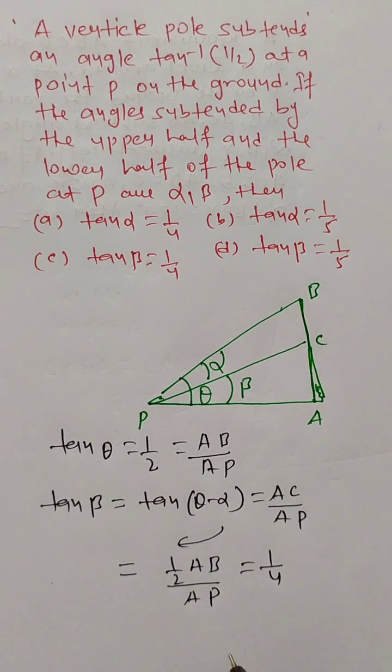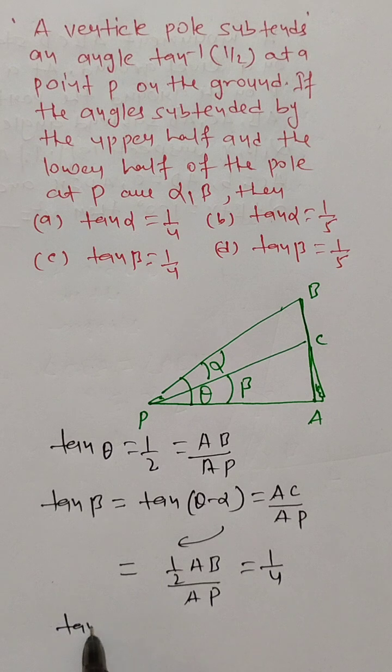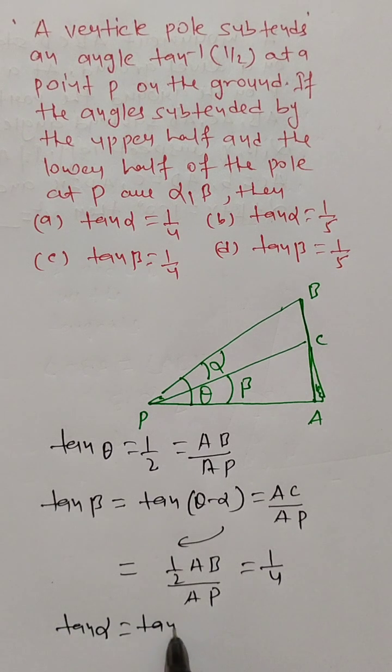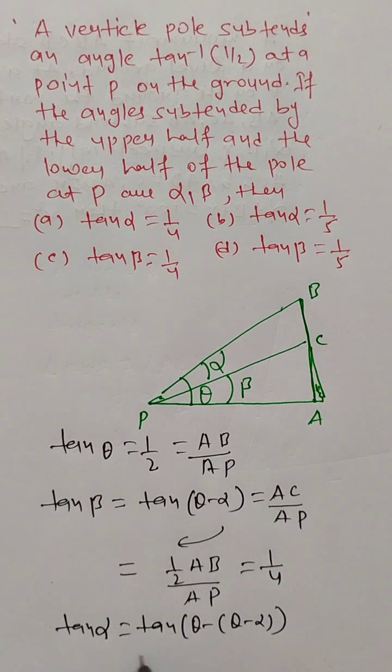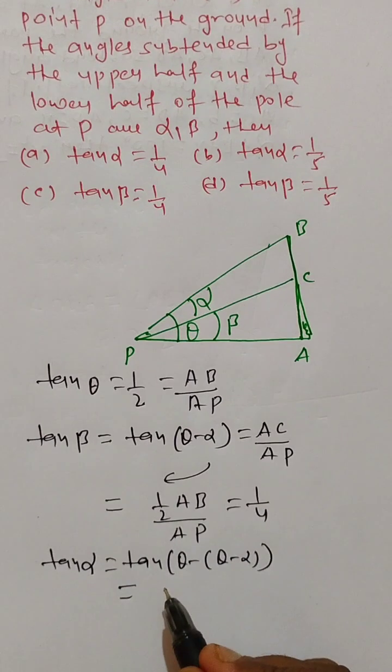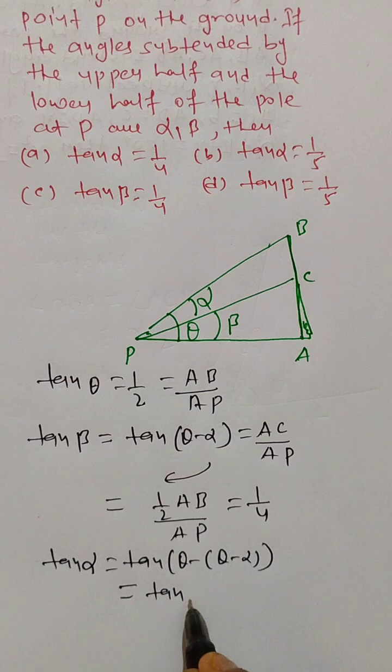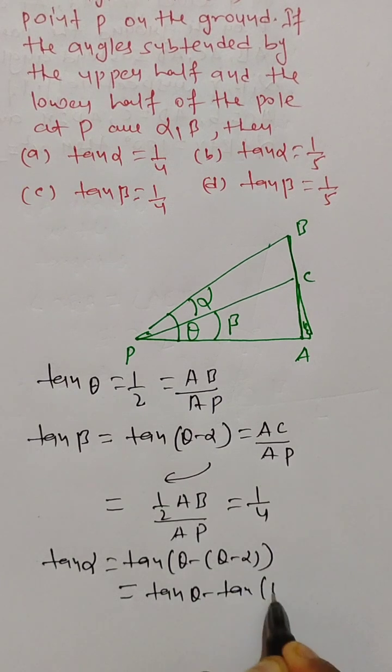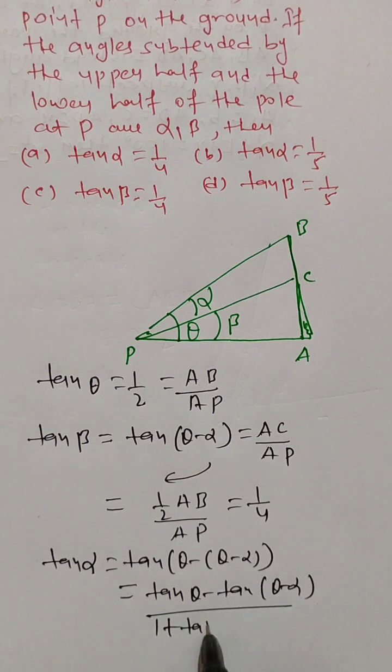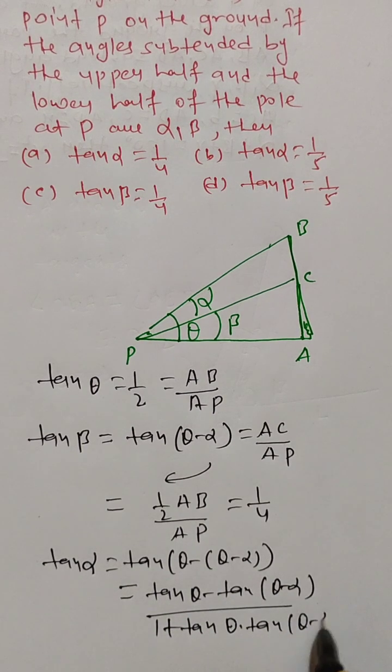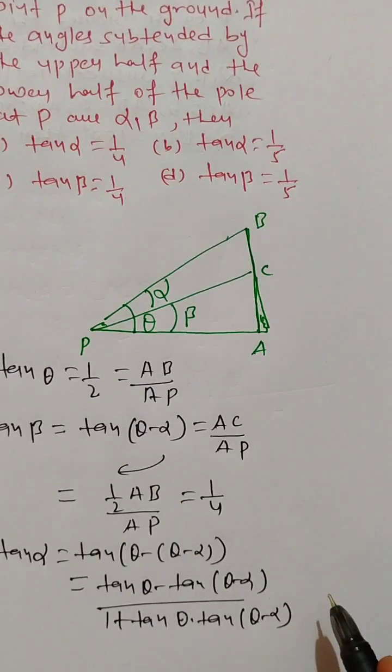And tan alpha equals tan of theta minus theta minus alpha. So in this case, this will be equal to tan theta minus alpha divided by 1 plus tan theta times tan of theta minus alpha.